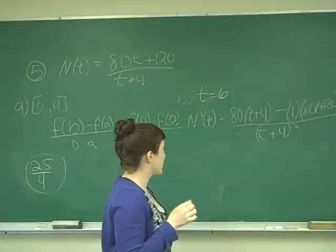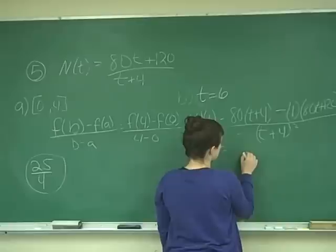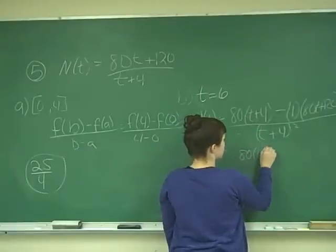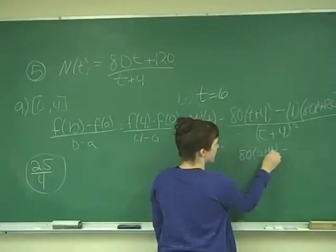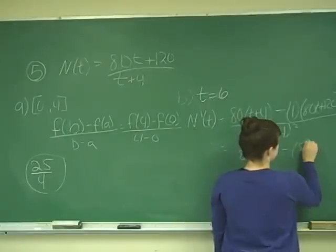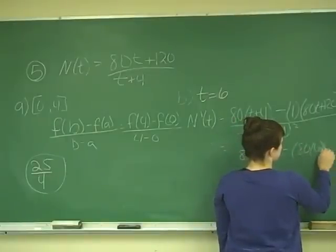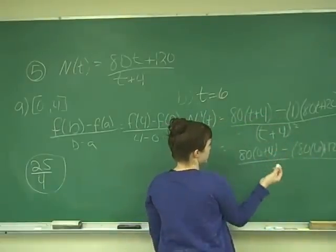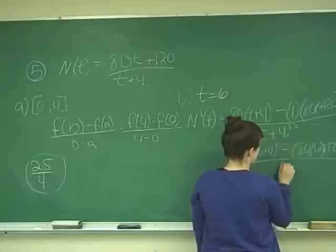And so we're looking at this at 6. So this is going to be 80 times 6 plus 4, minus 80 times 6 plus 120, all over 6 plus 4 is 10 squared is 100.